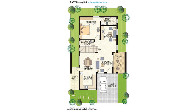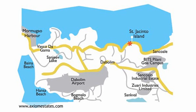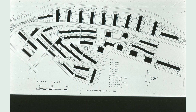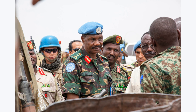In conclusion, estate planning is an important process that everyone should consider. It involves anticipating and arranging for the disposal of your assets and the distribution of your wealth after your death. The most common document is a will, but there are other important documents such as trusts, powers of attorney, and healthcare directives. Estate planning can help avoid family disputes, minimize taxes, and ensure your wishes are carried out. To keep your estate plan effective, avoid common mistakes such as not having a plan at all, not updating it regularly, and not communicating your wishes to your loved ones. Whether you're young or old, rich or poor, it's never too early or too late to start — so take the time to plan for your future and the future of your loved ones, providing peace of mind and ensuring they are taken care of after you're gone.